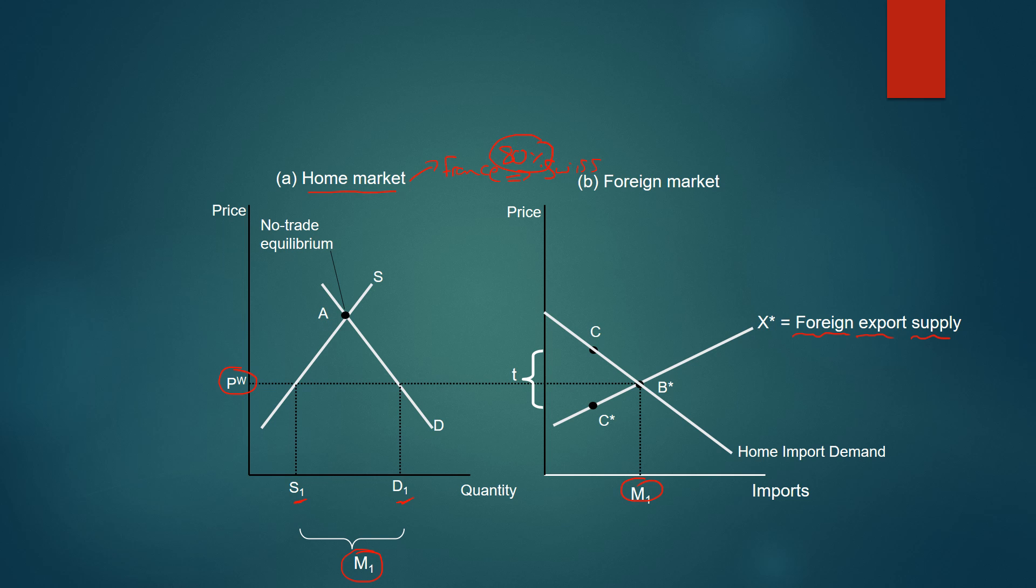And let's go ahead and introduce the tariff. Now, as we can see, the price has increased from Pw to P star plus T. And the important thing to note here is that rise is less than T units. What do I mean by that? Well, we can write it down up here and say that Pw to P star plus T is actually less than from Pw to Pw plus T.